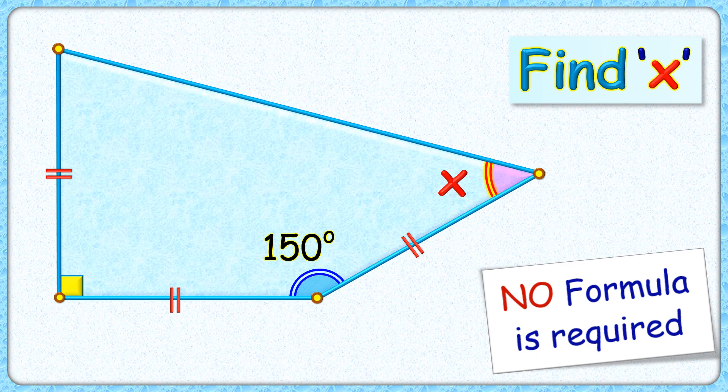Wow, this interesting question. Given to us is a quadrilateral with three sides equal to each other, two of the sides are perpendicular to each other, and this angle here is given as 150 degrees. The exciting part is, with this limited data, we have to find the value of this pink angle, or value of x.